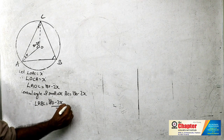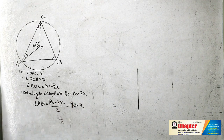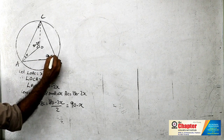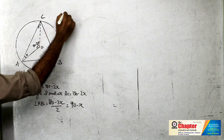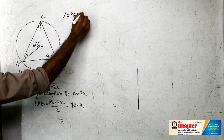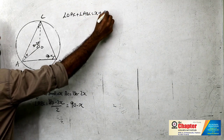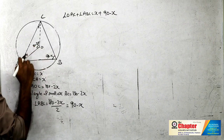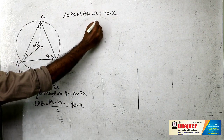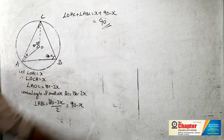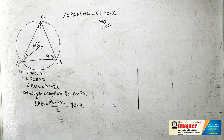So the inscribed angle ABC equals 90 minus x degrees. Angle OAC plus angle ABC is equal to x plus 90 minus x, the x cancels out, and the answer is 90 degrees.